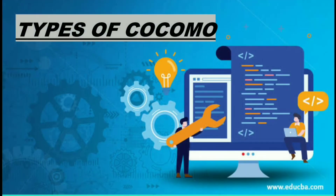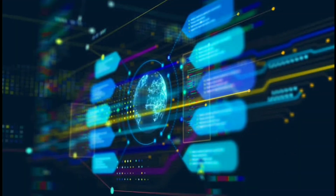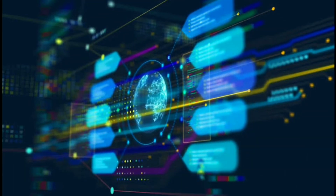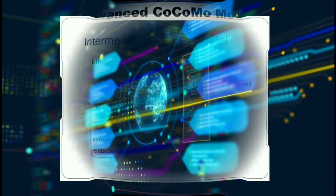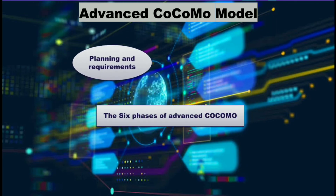There are three types of COCOMO: basic, intermediate, and advanced. Basic COCOMO is suitable for organic, embedded, and semi-detached projects, and calculates software development effort and development time using standard formulas. Intermediate COCOMO computes software development effort as a function of program size and a set of cost drivers that include subjective assessments of products and projects. Advanced COCOMO covers six phases: planning and requirements, system software, complete structure, module cost and test, integration, and test cost.